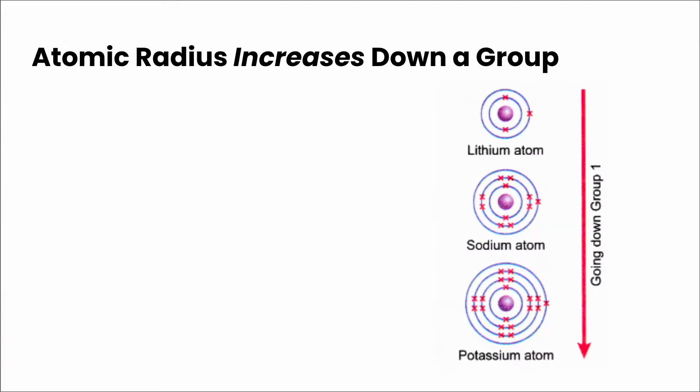All right, so now that we have those terms, we can describe why atomic radius increases down a group and decreases across a period.